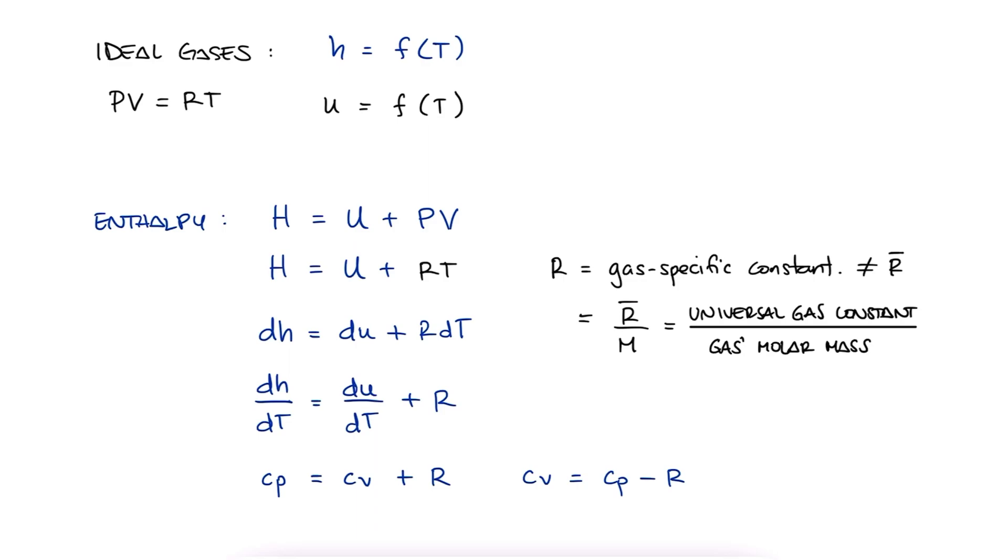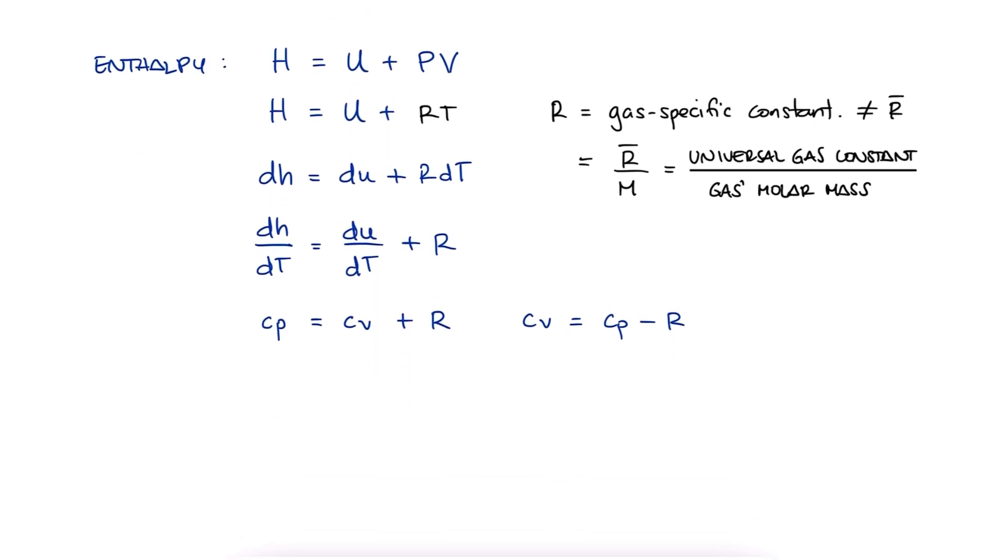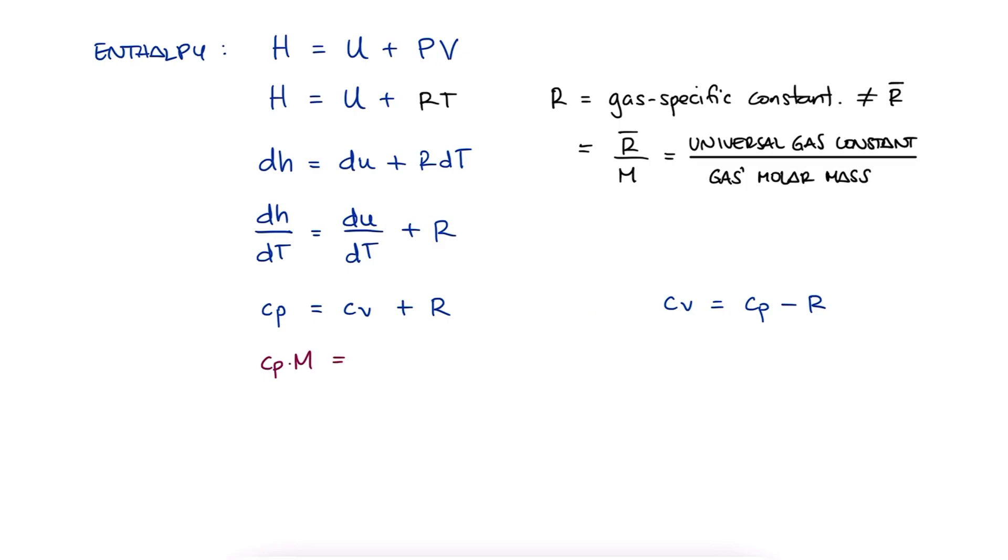And of course, this is also applicable for molar specific heats. If we multiply the left-hand side and the right-hand side by the molecular mass, we get cp bar equal to cv bar plus r bar, in this case the universal gas constant.